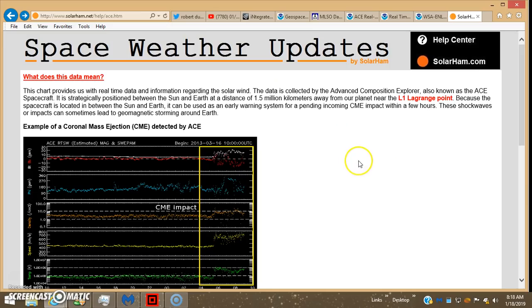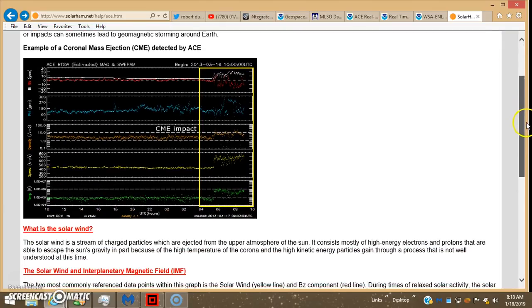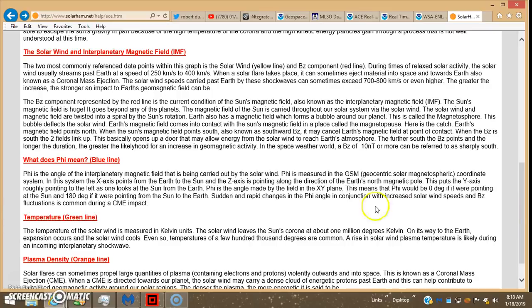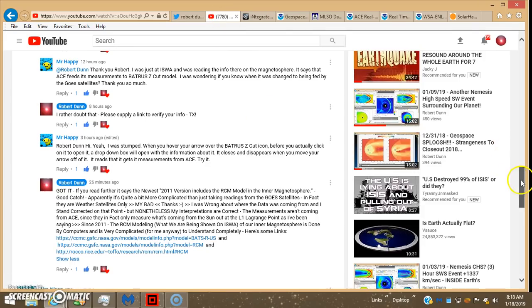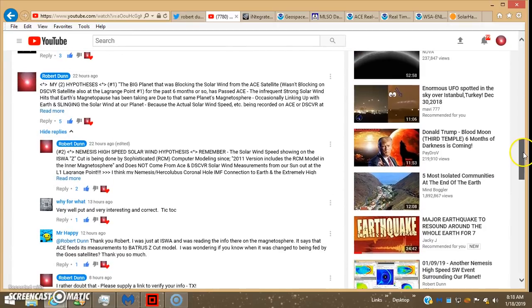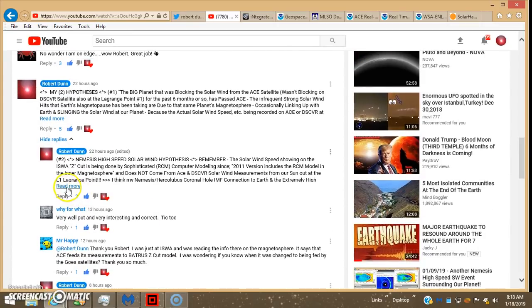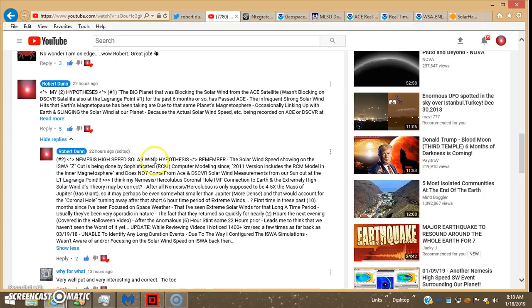So once again I encourage you to look in the description box, pull up this Solar Ham tutorial. This will explain the phi angle why for sure we're connected with something behind the earth. Anything above 180 would indicate a backside connection. And I'm really glad that Mr. Happy came in there and gave us some fresh information and I updated my solar wind hypothesis with that information instead of mentioning the ghost satellites.